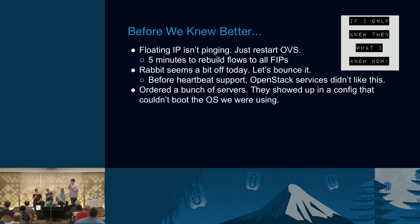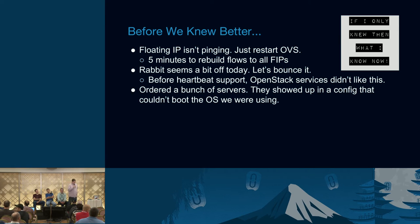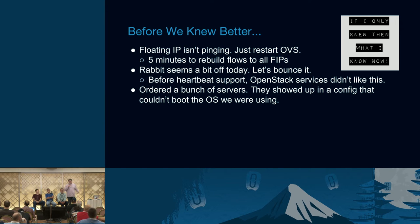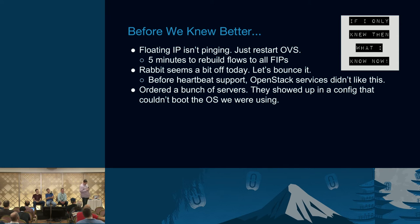Before we knew better — we've all learned a lot over the past few years in OpenStack. Originally, if we had a problem with the floating IP, we'd restart OVS. Turns out this isn't always the best solution, especially when you have a lot of routers on a box. It takes forever to get the flows back, and you have everyone unhappy instead of one person unhappy. In our early days, if Rabbit seemed weird, we would just bounce that — especially before heartbeat support. This last one is one of my favorites: we ordered a bunch of hardware, it showed up, got racked in the data center, and then we found out it couldn't boot the OS we wanted.